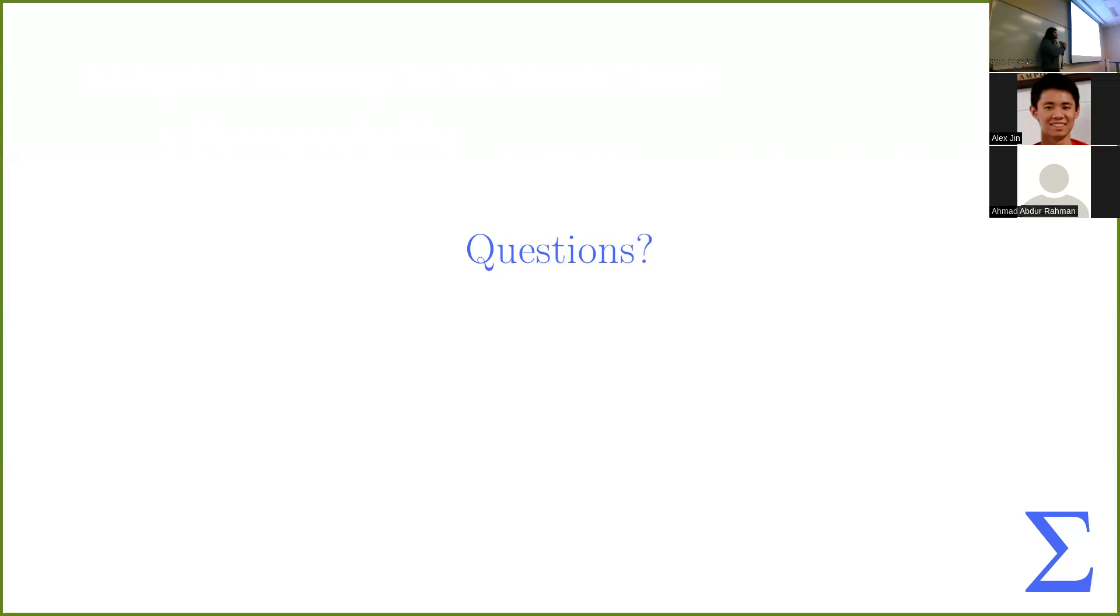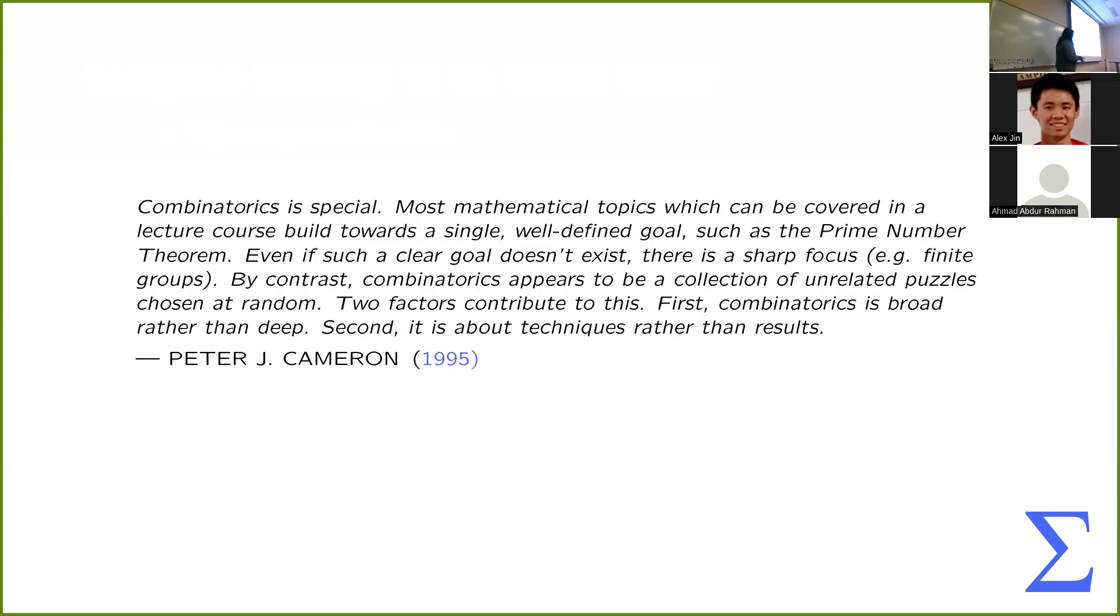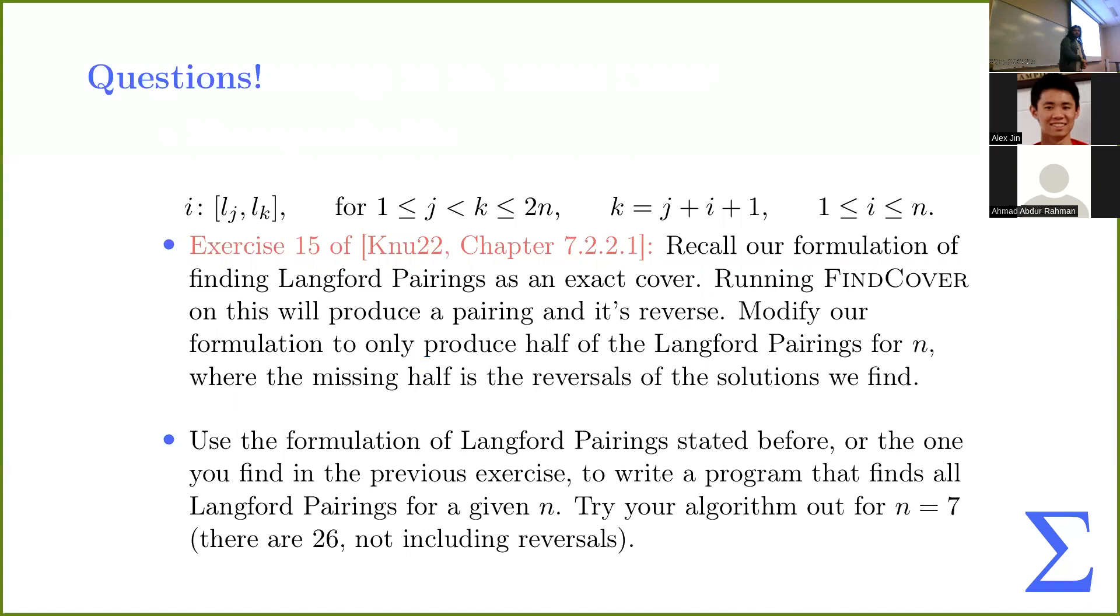Anyone else have any questions? All right, so I'll give you this quote by Peter J. Cameron, and it kind of does a nice job explaining why Combinatorics has this seemingly easy, like, it's easy to state things, but it's quite hard to actually work with them. And why I personally find Combinatorics to be beautiful, and the fact that it's all about techniques rather than results. I don't personally care too much about Langford pairings, but I think the exact cover problem in general is a very interesting problem, and there's lots of cool techniques out there. All right. And so with that, we are done here. But here's some questions that people can work on, or there were some questions throughout the slides, if you feel like working on them.